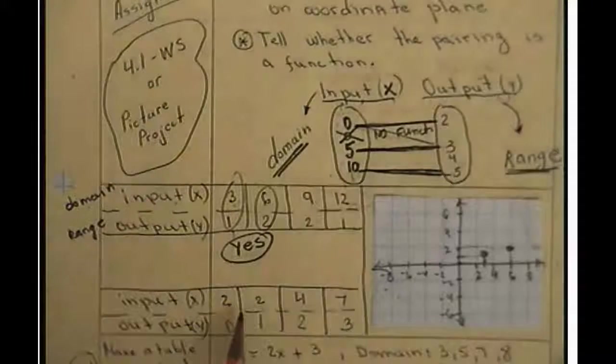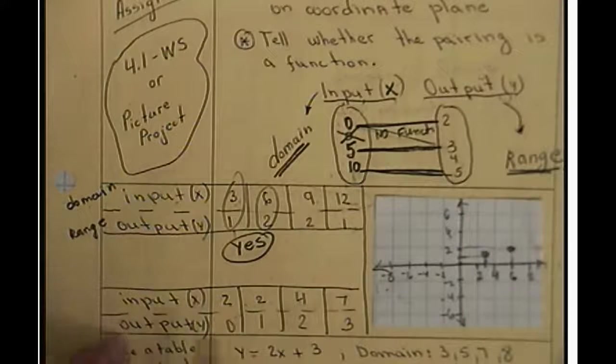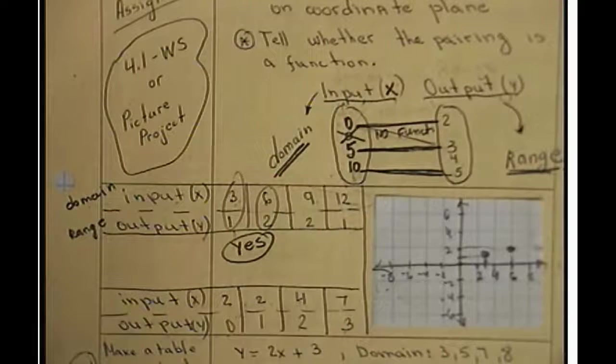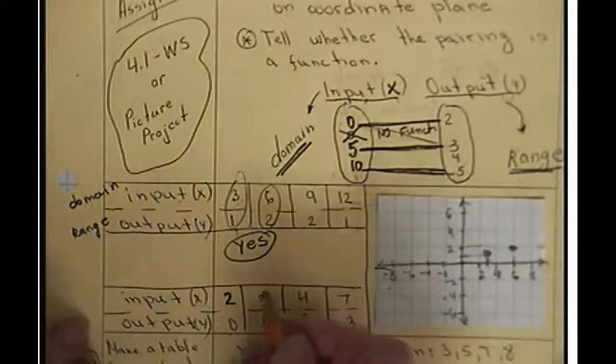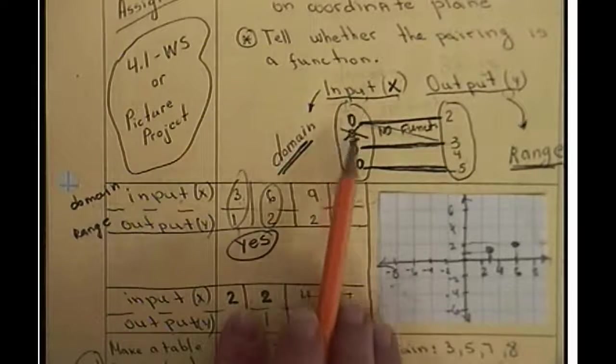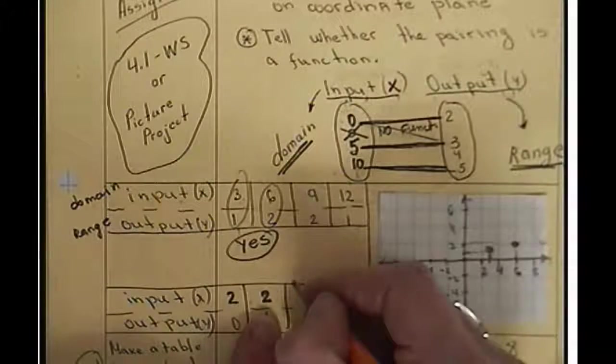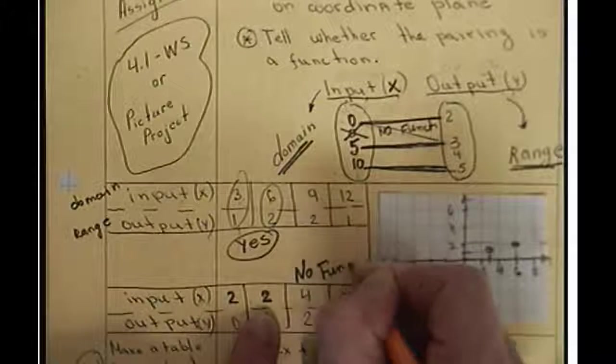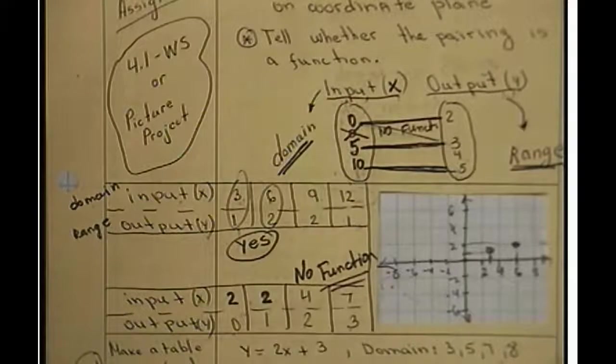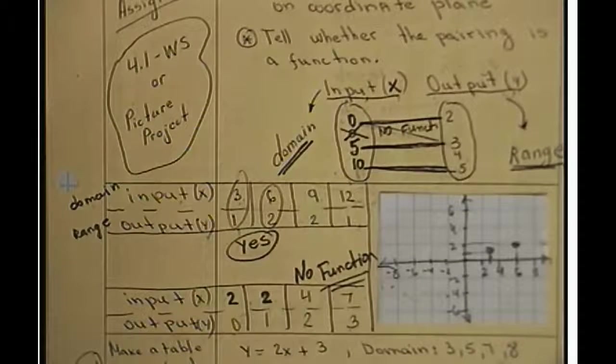Now, look at the second table. So we have input x with numbers 2, 2, 4, 7, and output y with 0, 1, 2, and 3. What do you notice here? Well, I hope everybody sees that x or input has two numbers, two. And we just said at the beginning that the input x values should not repeat. If they repeat, what happens is the answer is no function here. No function. And we don't graph it, because if there is no function, we cannot graph it. It's going to be just some lines going up and down in some different directions, and that would not make sense.